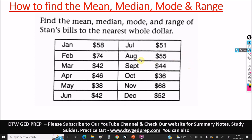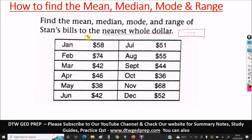To get the mean, median, mode and range, let's look at this example. It says: find the mean, median, mode and range of utility bills to the nearest whole dollar. Some GED questions like this can come out in the box format — not the option format — where you have to type in your values.